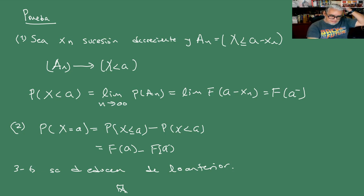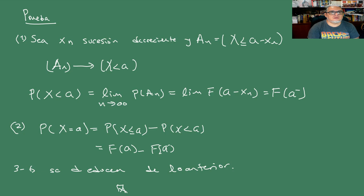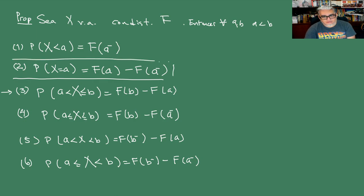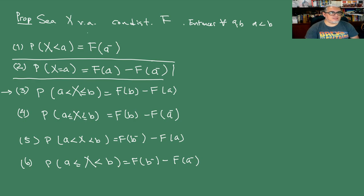Ahora, aquí quiero que nos detengamos en una cosa y regresemos un poco. ¿Qué es lo que nos está diciendo la fórmula 2? La diferencia entre el límite por la izquierda y el valor de la función: si existiera una discontinuidad, lo que mide esta probabilidad es el tamaño de la discontinuidad en la distribución.